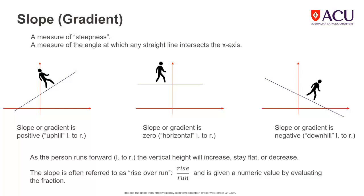How steep the gradient is depends on how much up or down we travel compared to how far along we travel. The usual way to describe the gradient is rise over run, and this gives a measure of how steep the gradient is.